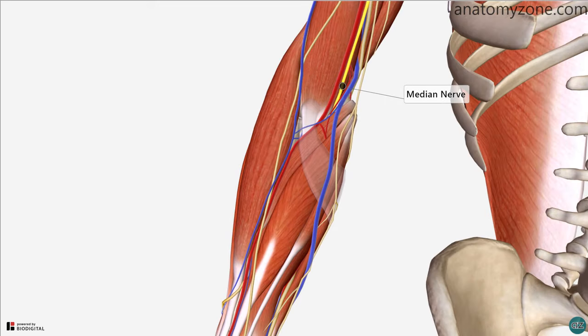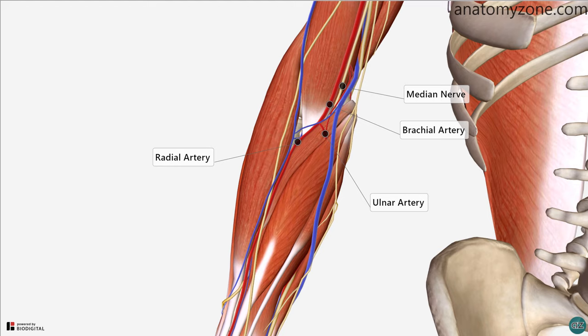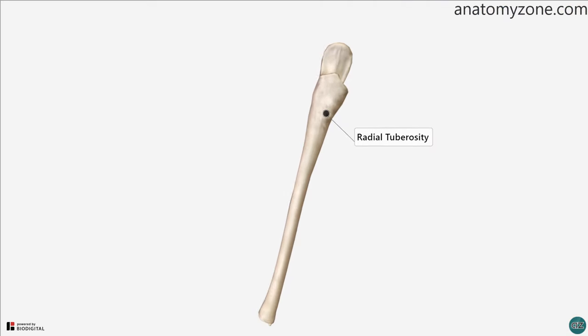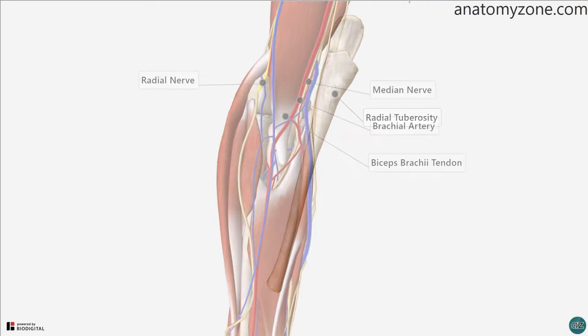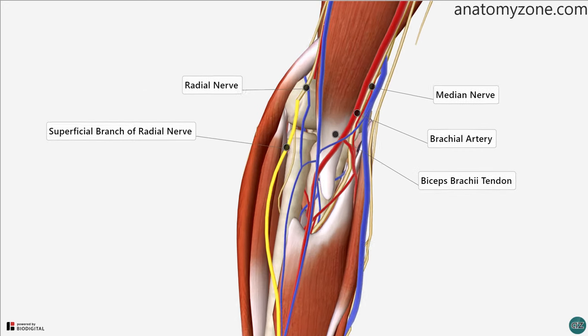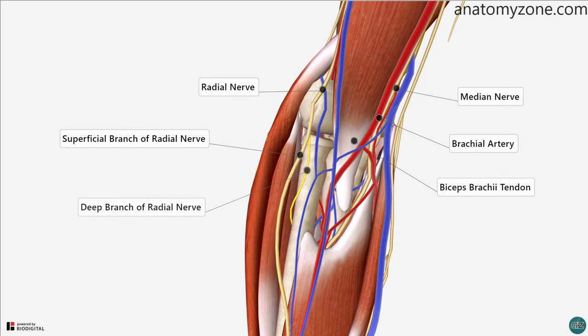Coming back to the median nerve, this leaves the cubital fossa by passing between the ulna and humeral heads of the pronator teres muscle. The brachial artery branches into the radial artery and the ulnar artery at the apex of the triangle. The biceps brachii tendon passes through the middle of the cubital fossa, attaching to the radial tuberosity. Laterally, we have the radial nerve, which passes under the brachioradialis muscle, where it divides into superficial and deep branches.